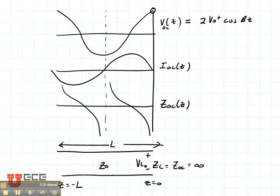Now what about the current? Do we expect any current to go through this open circuit? No, we don't. And right here at the load, it is zero because this load is minus 2jV0+ divided by Z0 times the sine of beta Z.